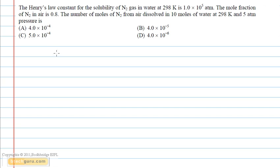For nitrogen, the partial pressure is given as Henry's law constant multiplied by the mole fraction of N2. Since we have been given that the pressure of air is 5 atm and the mole fraction of nitrogen in air is 0.8, therefore, the partial pressure of nitrogen will be equal to 0.8 into 5.